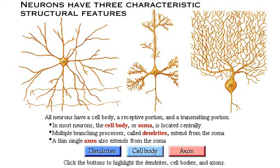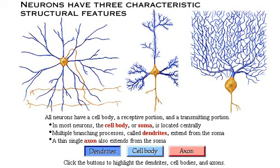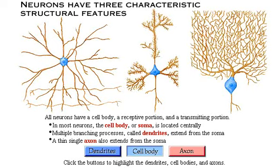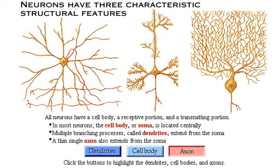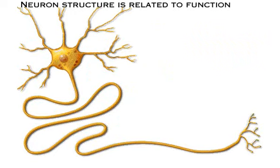Click the buttons to highlight the dendrites, cell bodies, and axons. Let's examine the structural features of a typical neuron to see how they are related to function. Click each anatomical region of the neuron to reveal its function.